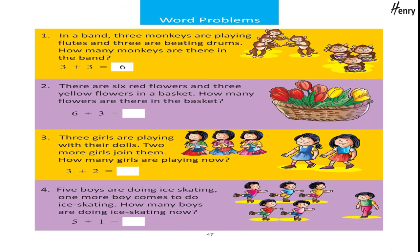Word problems. In a band, three monkeys are playing flutes and three are beating drums — how many monkeys are there in the band? Three plus three equals six. There are six red flowers and three yellow flowers in a basket — how many flowers are there in the basket? Six plus three equals... Three girls are playing with their dolls; two more girls join them — how many girls are playing now? Three plus two equals...